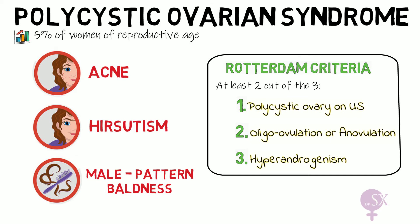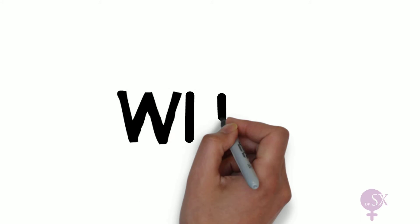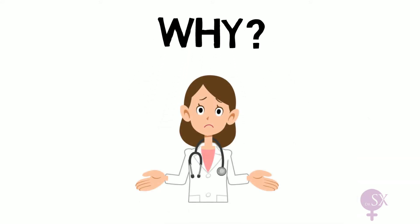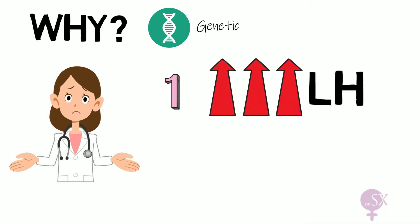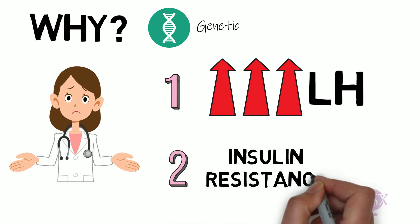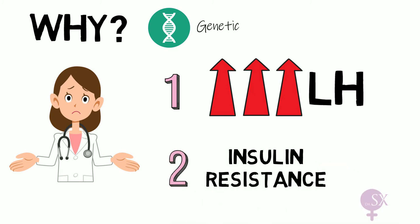Now let's understand why this happens. Unfortunately the pathophysiology behind PCOS is not completely understood; there is certainly a genetic component. We do know it is attributed to two main problems: number one is very high levels of luteinizing hormone, and number two is insulin resistance. We're going to look at these two in turn.